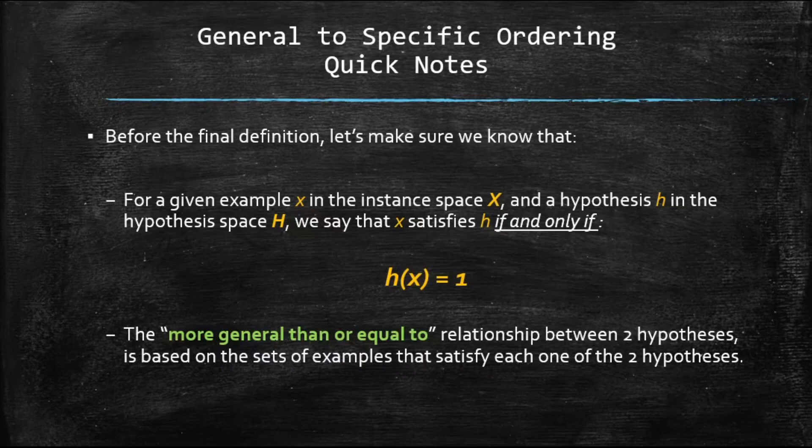Number two, more general than or equal to relationship, the one that we just talked about between two hypotheses, is only based on the sets of examples that satisfy each one of the two hypotheses. If all the examples that can satisfy one hypothesis can also satisfy the second hypothesis, then we can say that the second hypothesis is either equal to hypothesis one or more general than that, meaning that there could be cases where can satisfy h two as well, but guess what, they couldn't satisfy h one.